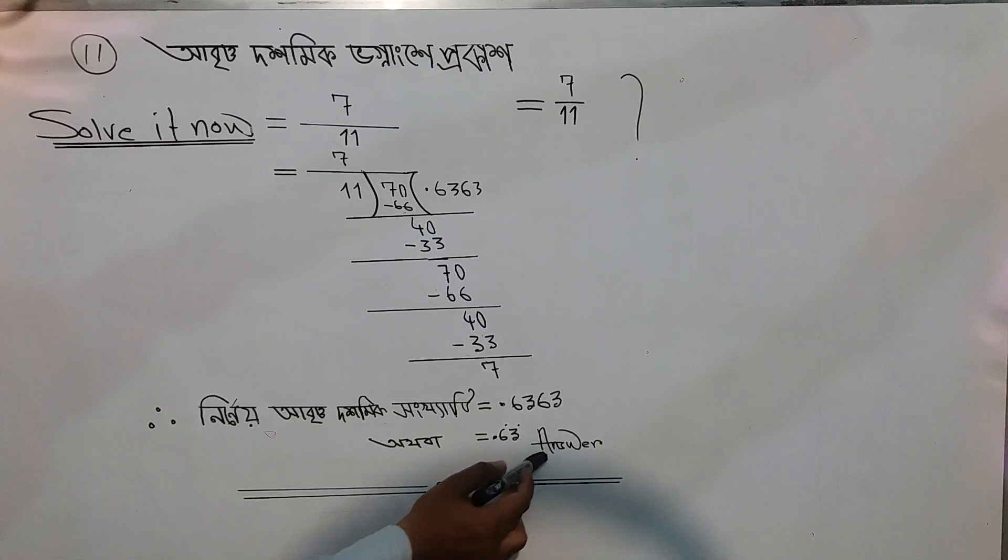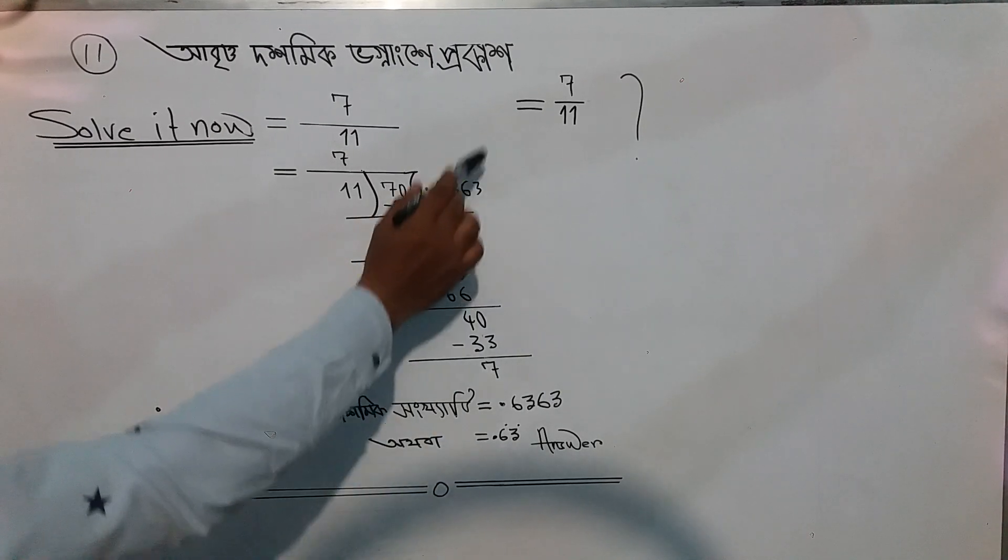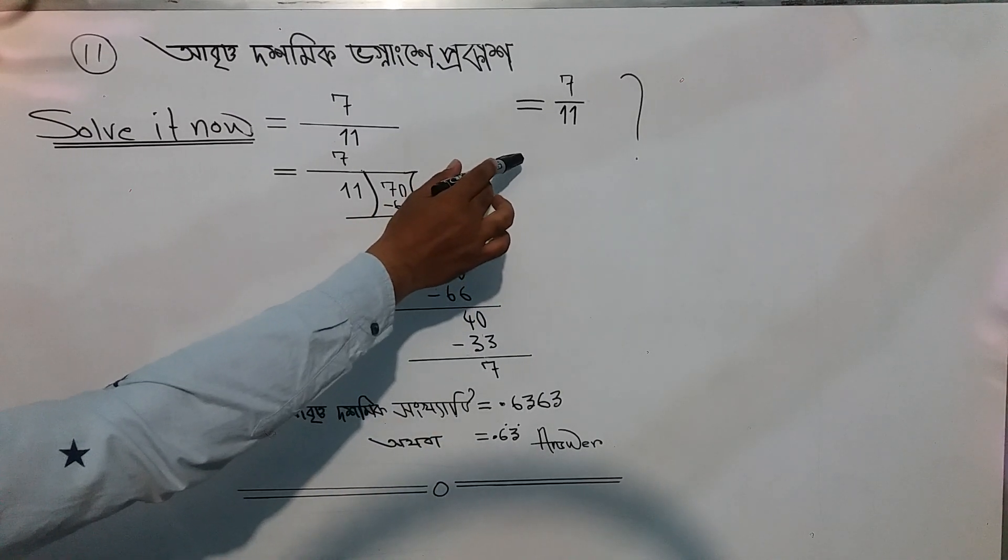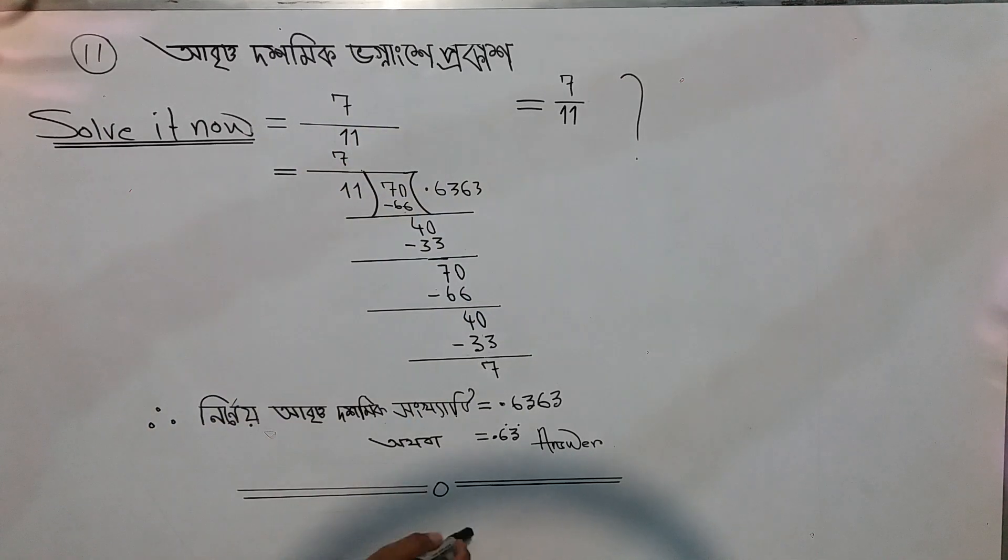So if we express seven by eleven in decimal form, the answer is decimal point six three six three repeating - with the six three pattern recurring. This is how we answer it.